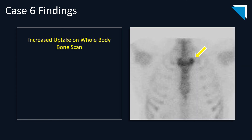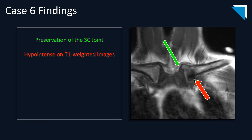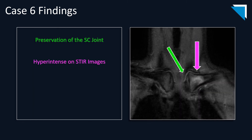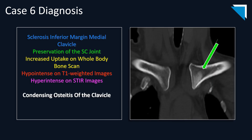This second patient also underwent whole-body bone imaging demonstrating increased uptake within the medial left clavicular head. On MR imaging, the area of sclerosis is hypointense on T1-weighted imaging with preservation of the sternoclavicular joint. On STIR imaging, there is intense marrow edema surrounding the area of sclerosis. The diagnosis is condensing osteitis of the clavicle.